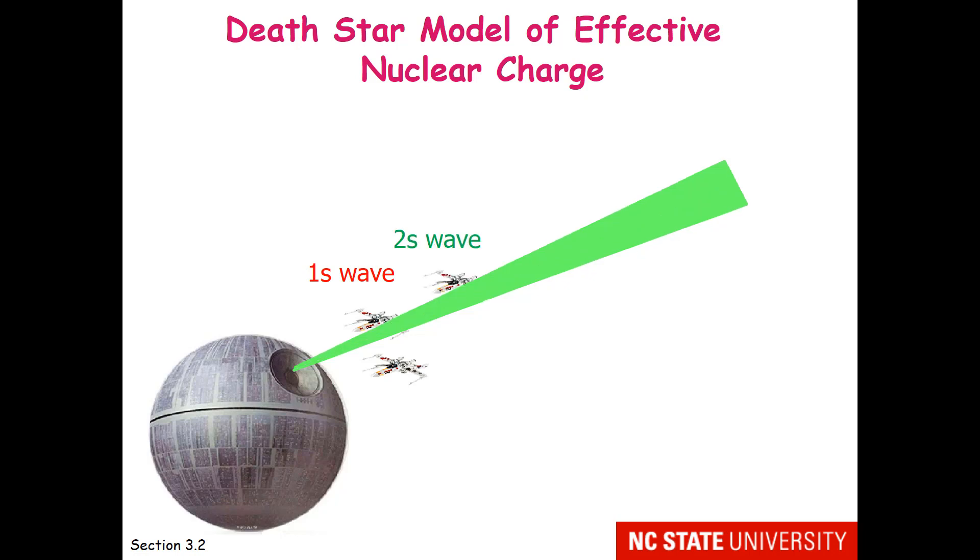Let's bring in the 2s wave. Once again, the operators of the Death Star are going to say, now I need to turn that tractor beam up because there's another ship out there. The 2s wave, you notice, is further away than the 1s wave. This is what I mean by inner shell electrons interfere more than same shell electrons. Certainly for this 2s wave, these first two ships are interfering a bit with the effect of the tractor beam. Let's add another electron, so the tractor beam will be stronger. You notice how for this new ship, the core electrons interfere more with the tractor beam than the ship in the same attack wave.